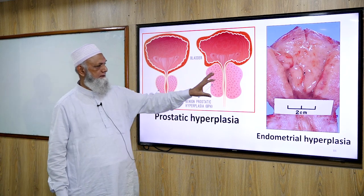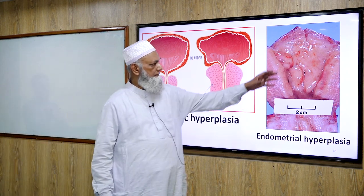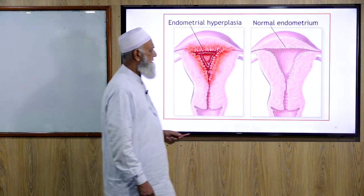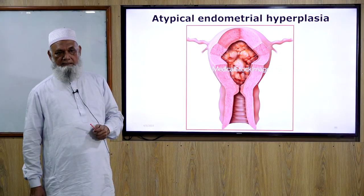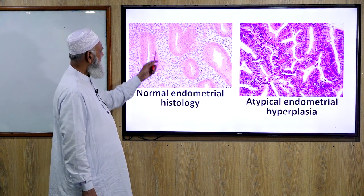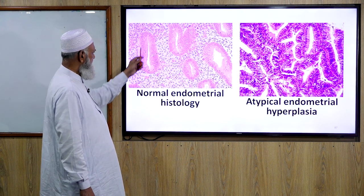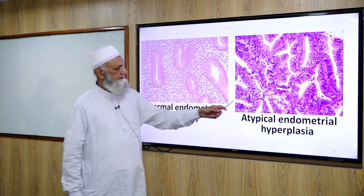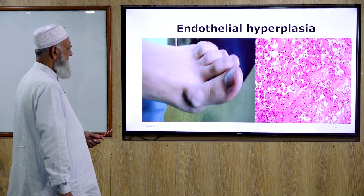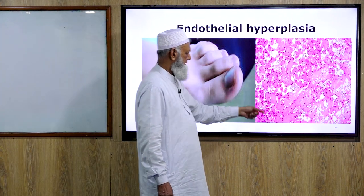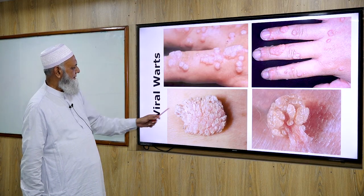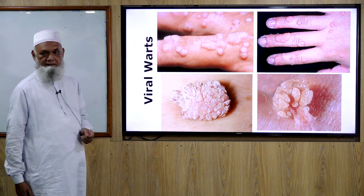This shows a normal prostate compared to a hyperplastic prostate, and endometrial hyperplasia gross and histological features. Atypical endometrial hyperplasia is a pre-malignant condition. Normal endometrial histology shows glands and stroma. Also shown are fibroblastic hyperplasia, endothelial hyperplasia with numerous blood vessels, and viral warts showing hyperplastic skin — all representing different forms of hyperplasia.